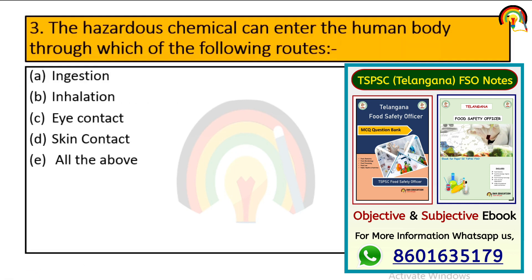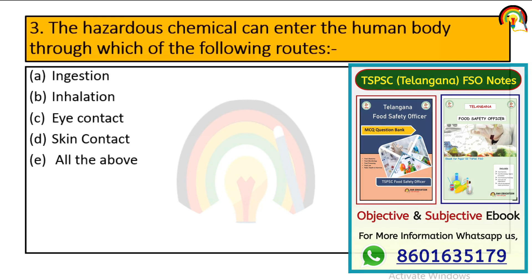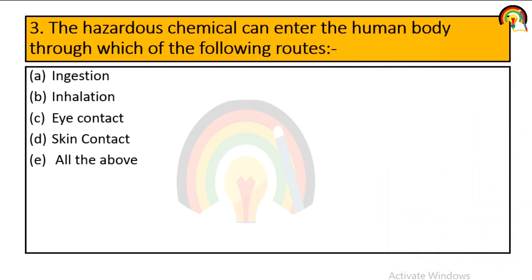Hazardous chemicals can enter the human body through each of the following routes: ingestion, inhalation, eye contact, skin contact, or all of the above. Hazardous chemicals in the human body can enter by ingestion, inhalation, eye contact, and skin contact — so it's all of the above.